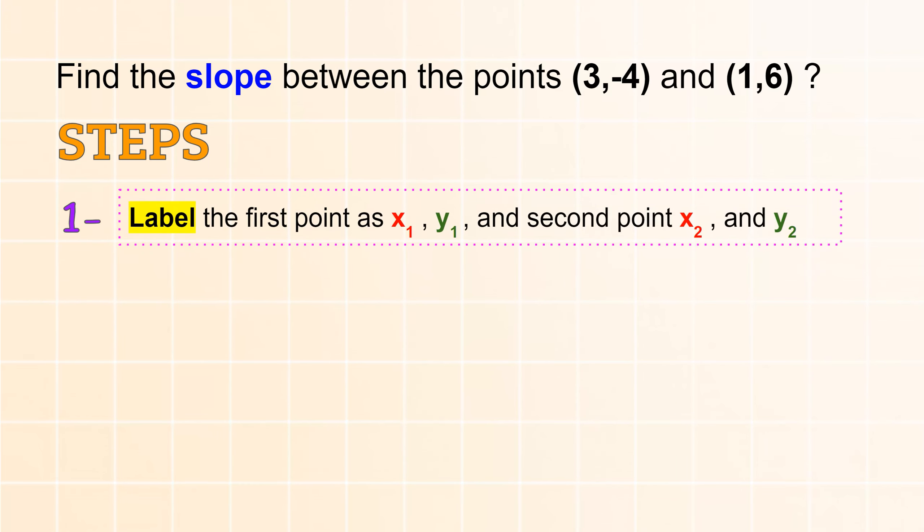Step 1: You have to label the points that are given to you as x sub 1, y sub 1 for the first point and the second point to be x2 and y sub 2. That's the first step, labeling.